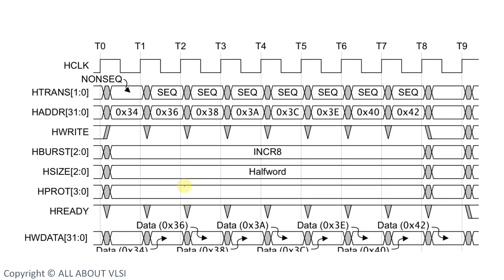In the case of INCR8 burst, the number of beats equals 8 — in a single transaction we send 8 packets. The initial address is 0x34 and the next addresses are 0x36, 0x38, 0x3A, 0x3C, 0x3E, 0x40, 0x42. There is no wrapping back to the initial address. In an incremental burst we keep incrementing until we reach the 1KB address boundary allocated for that slave.